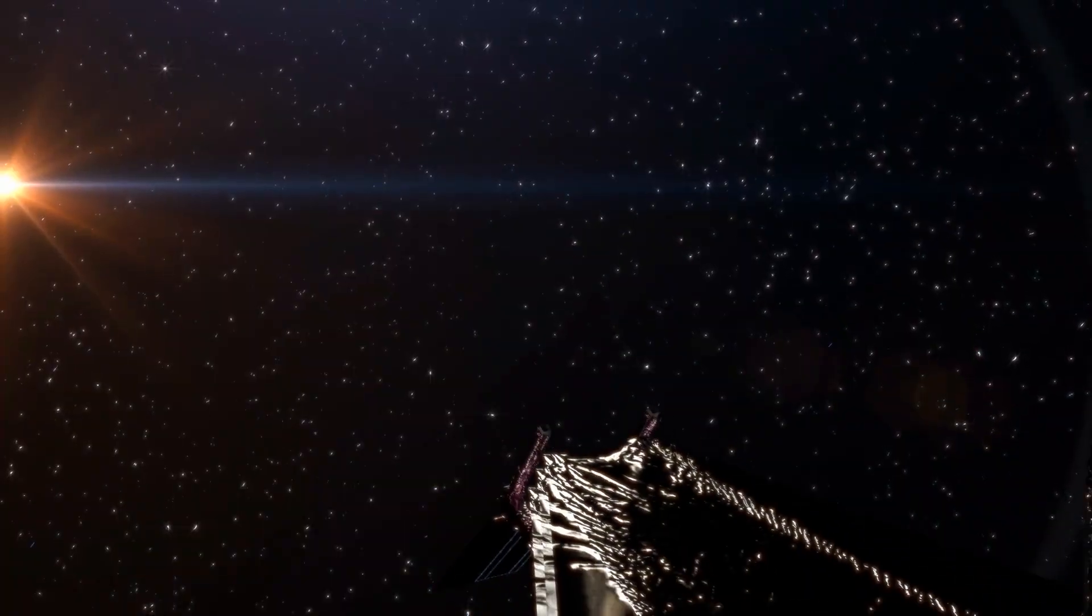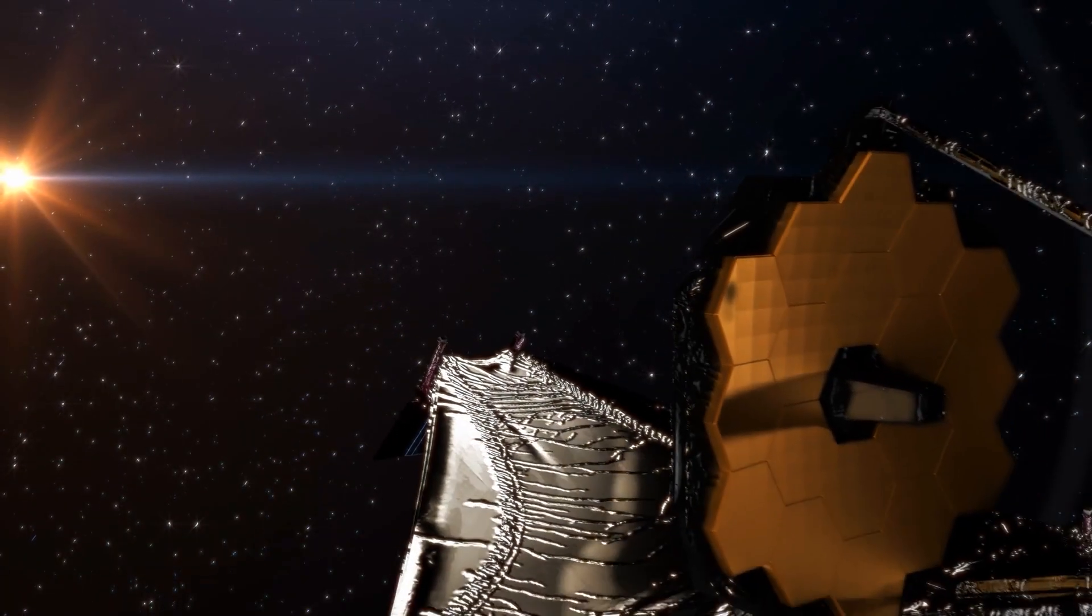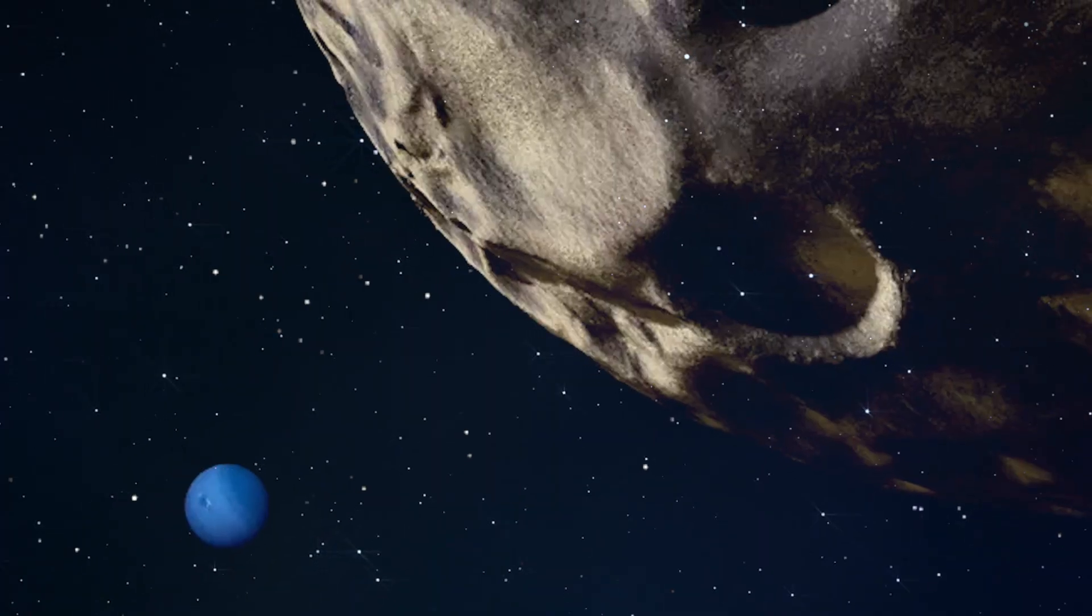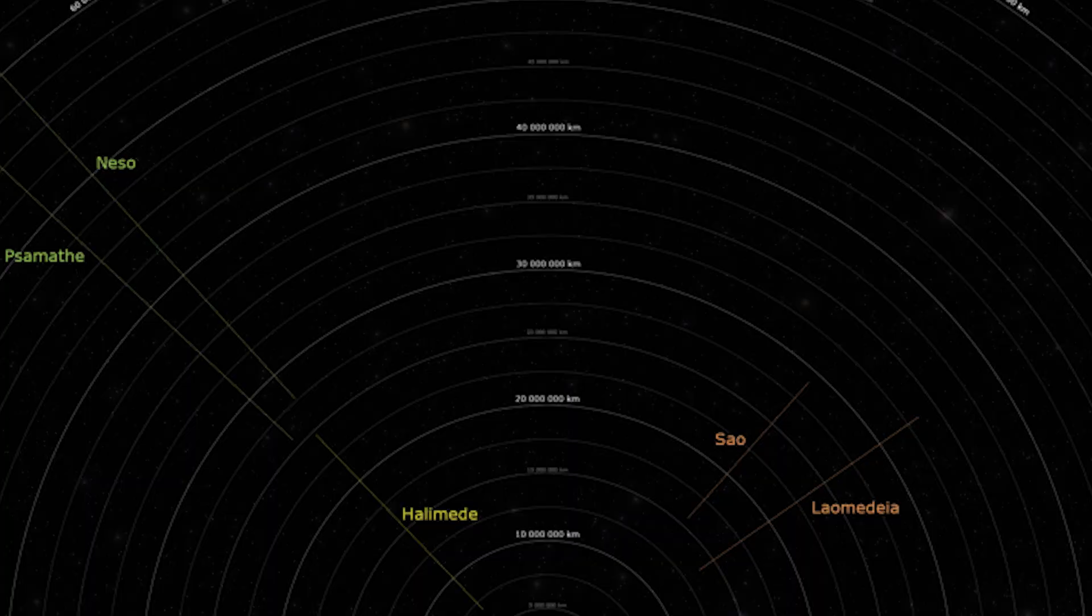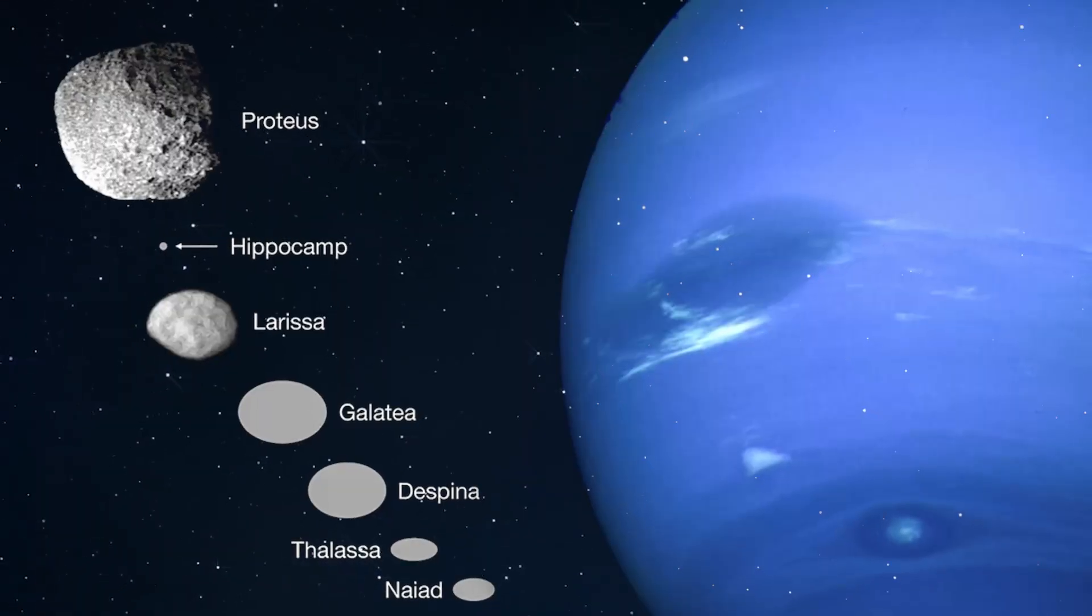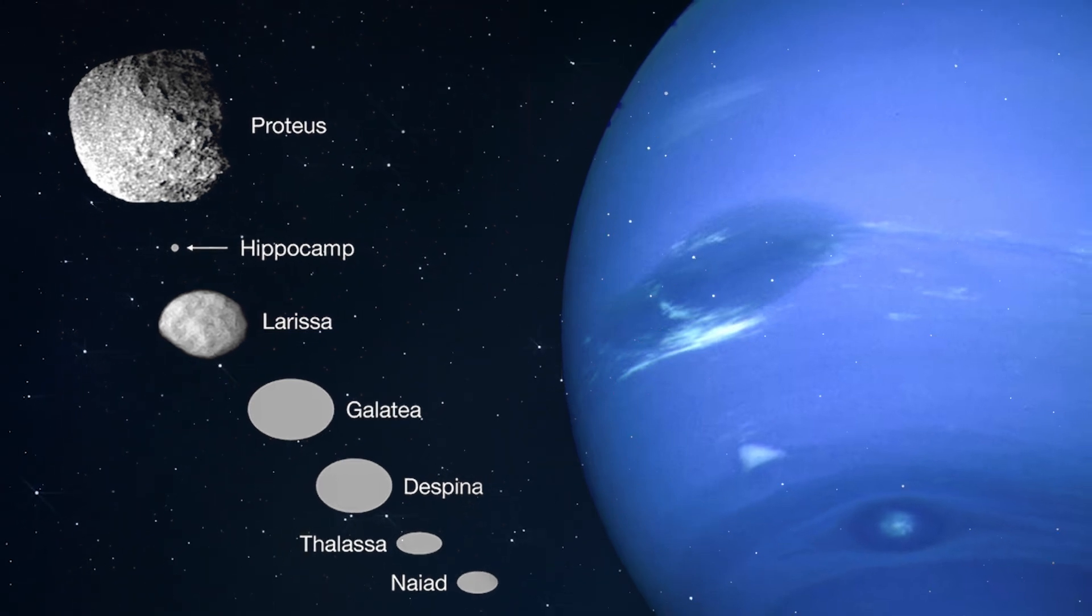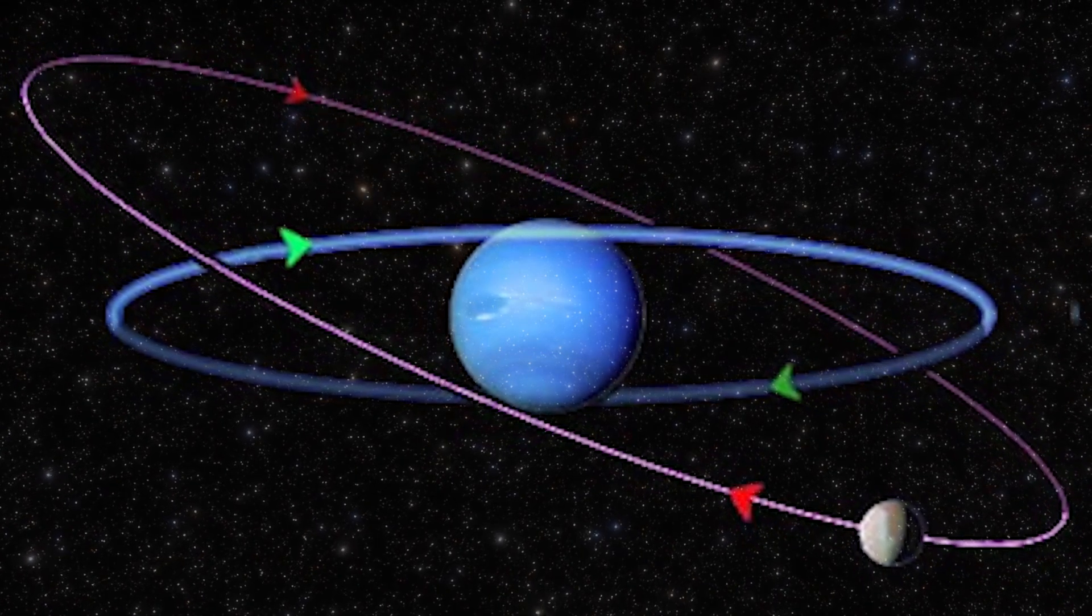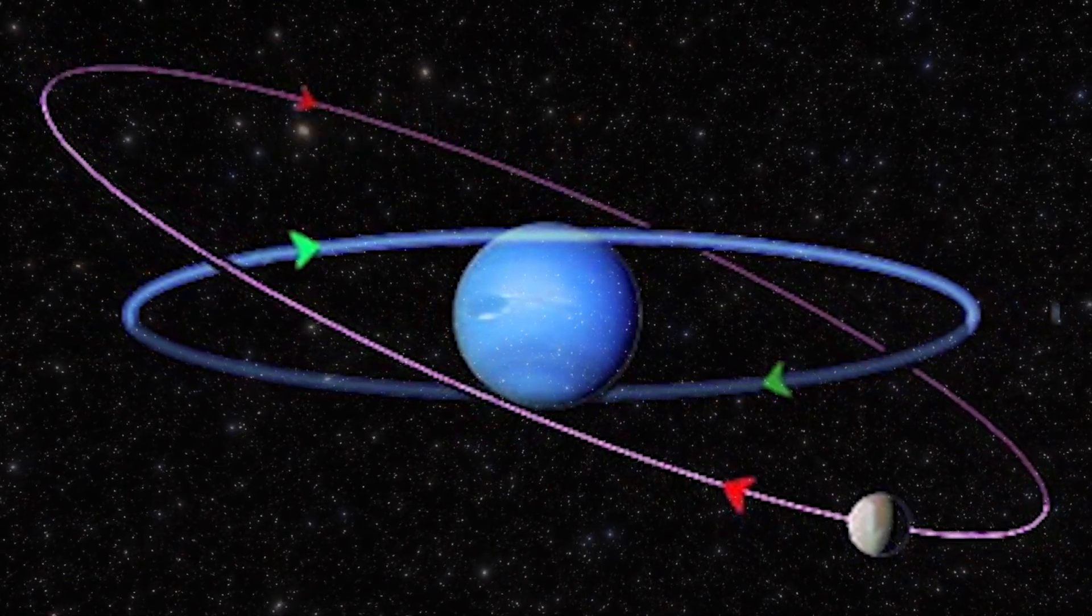Apart from the captivating rings, the James Webb Space Telescope also captured the beauty of Neptune's satellites during its observation. Neptune has a total of 14 moons, categorized as regular and irregular. Webb's lens focused on six of the inner regular satellites, including Despina and Galatea, which play a crucial role in forming Neptune's rings by acting as shepherds for the dust particles.